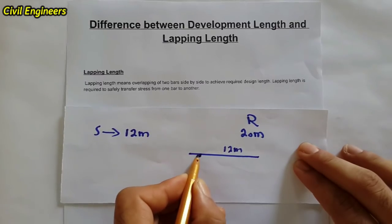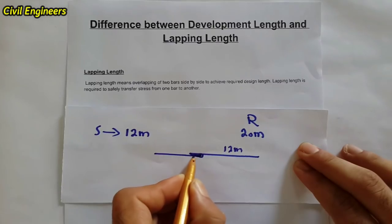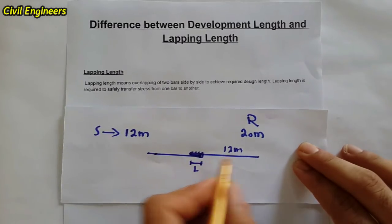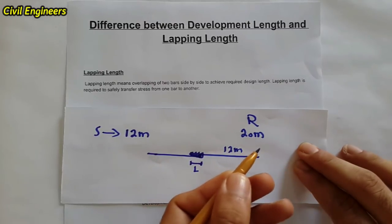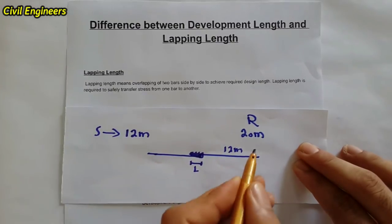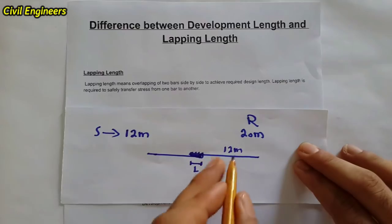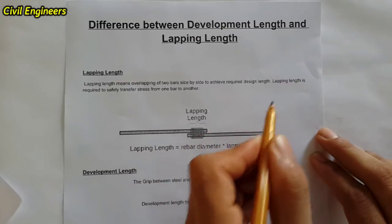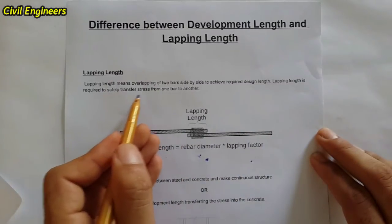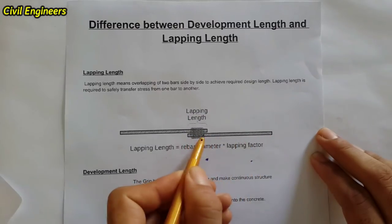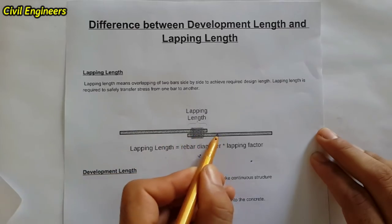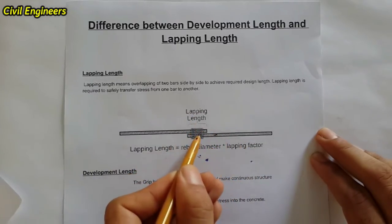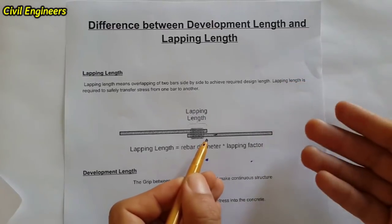To achieve the 20-meter design length, we overlap one steel bar with another. This overlapping point and its length is called the lapping length. Each bar has a standard length of 12 meters, and by overlapping them we achieve the required design length. The lapping length safely transfers stress from one bar to the other, allowing us to achieve the required length for slabs, columns, and other structural elements.